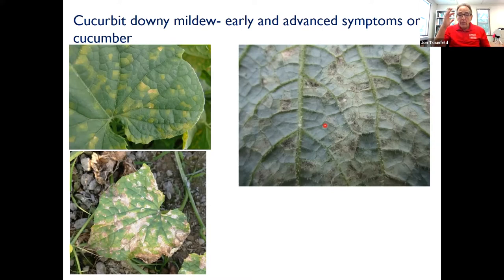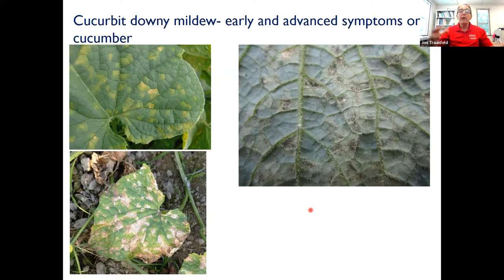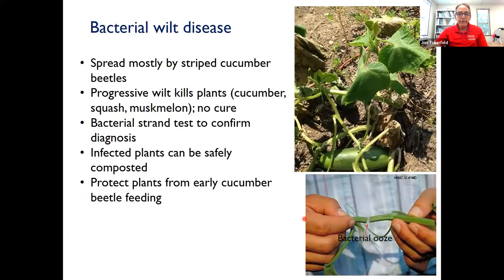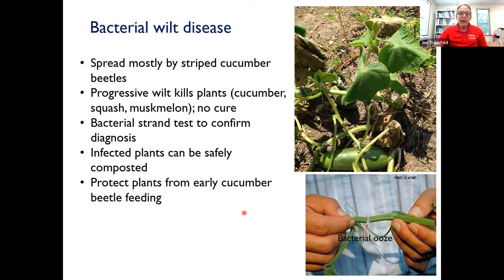Downy mildew is a bad one. Bacterial wilt — another heartbreaker. If you're growing cucumbers and the plants are wilting even though you've been watering and it's been raining, it only takes very minor cucumber beetle feeding to transmit this disease. It's actually spread through the feces, not through the mouthparts of the insects. There's nothing you can do — once you see this kind of wilting, just pull the plants up and start over. There is one variety called County Fair — a pickling cucumber — that has genetic resistance to bacterial wilt. All other varieties can get it, so controlling cucumber beetles is the way to prevent this disease. If you wonder whether you have it, cut a stem where you see wilting, remove that whole stem, cut it in half and put it in some room temperature water — if the bacterium is inside the plant, you'll see milky white oozing out of the stem into the water as confirmation.